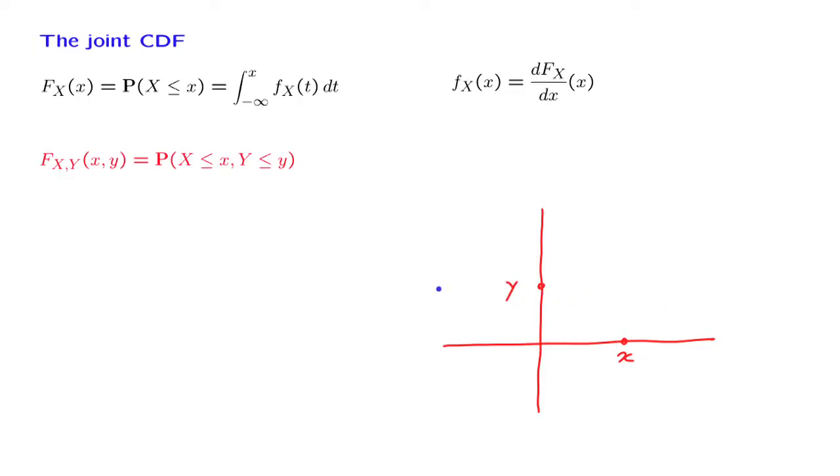So we are talking about the probability of the blue set in this diagram. This probability can be found by integrating the joint PDF over the blue set. Since we're using x and y to be some specific numbers, let us use different dummy variables to carry out the integration.